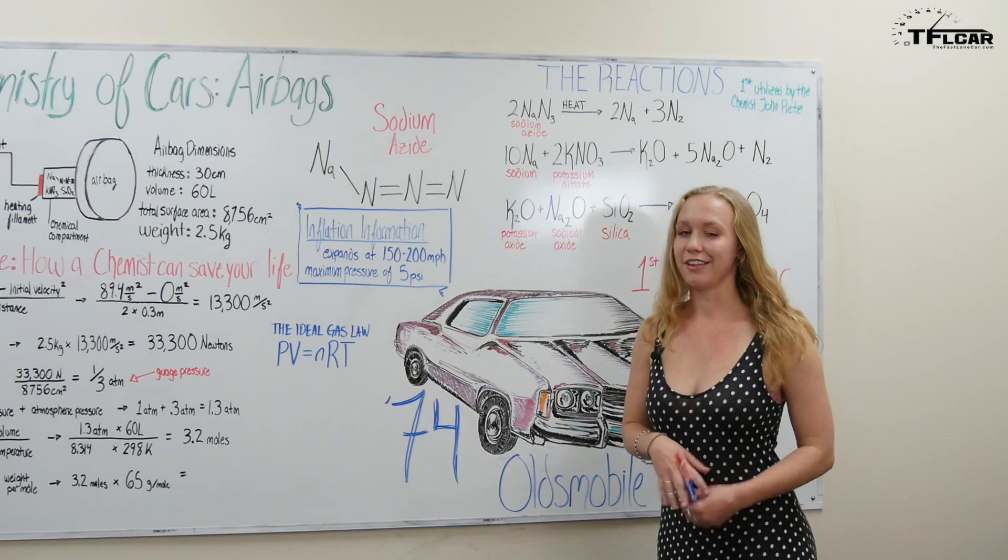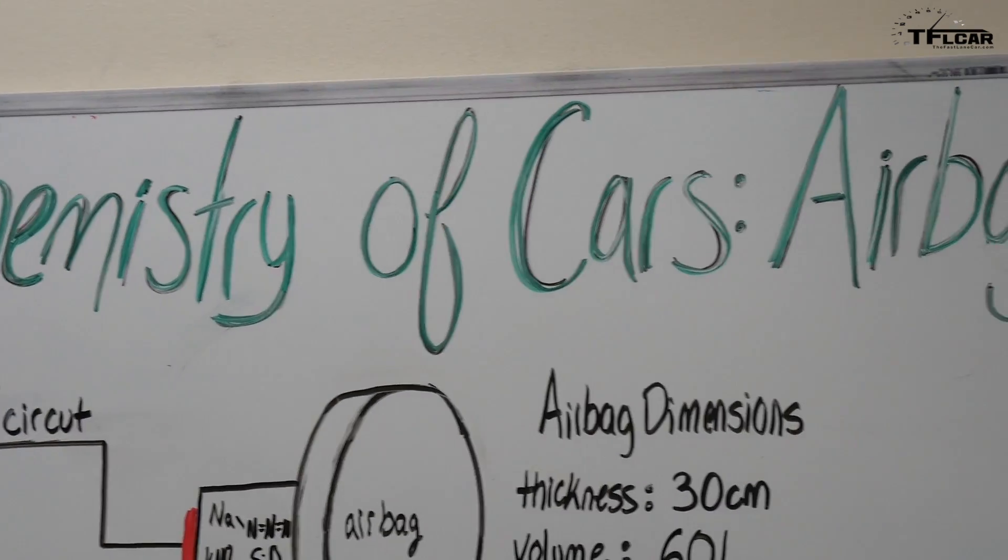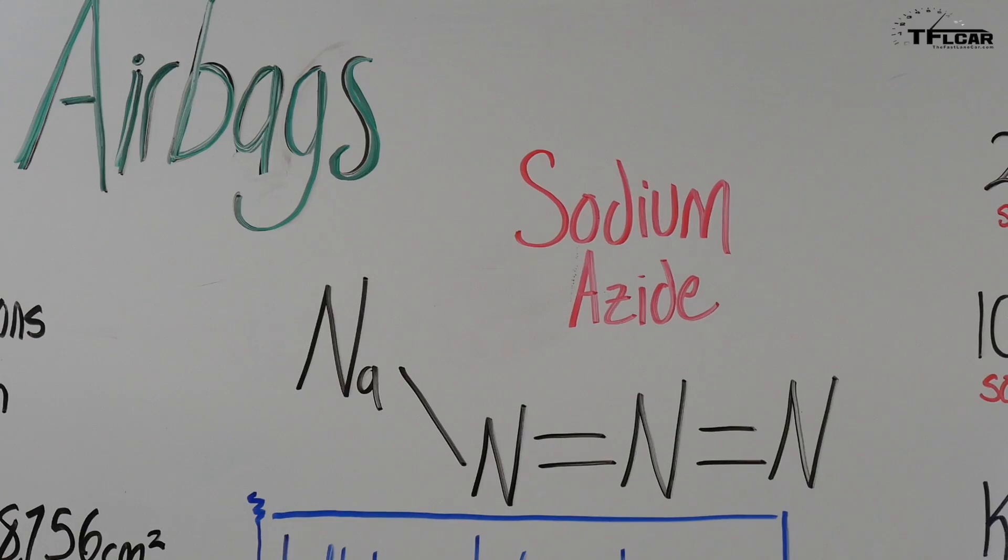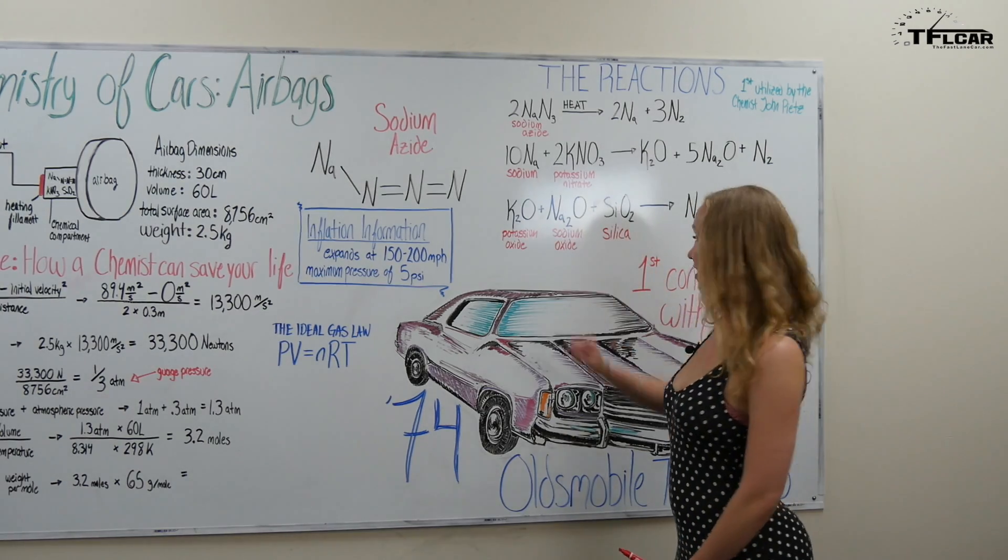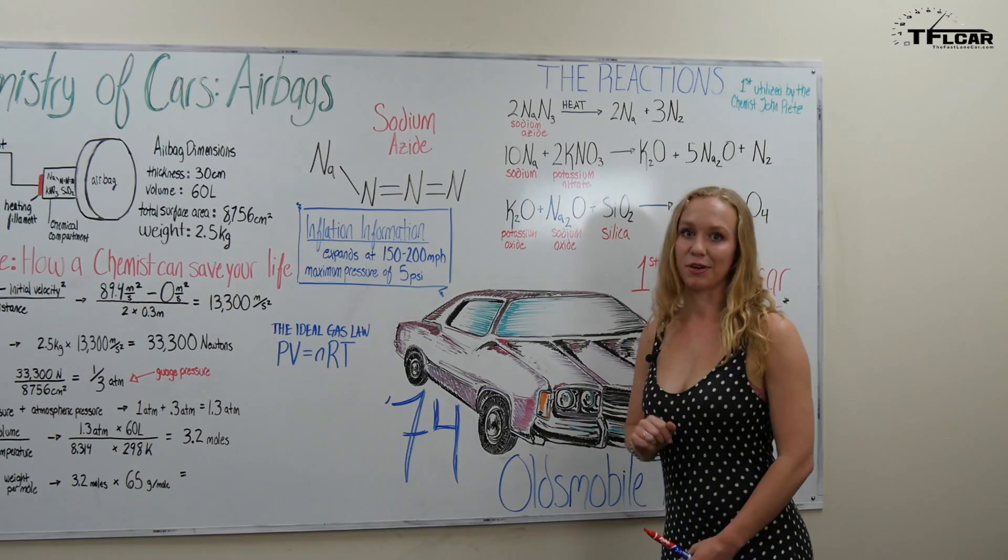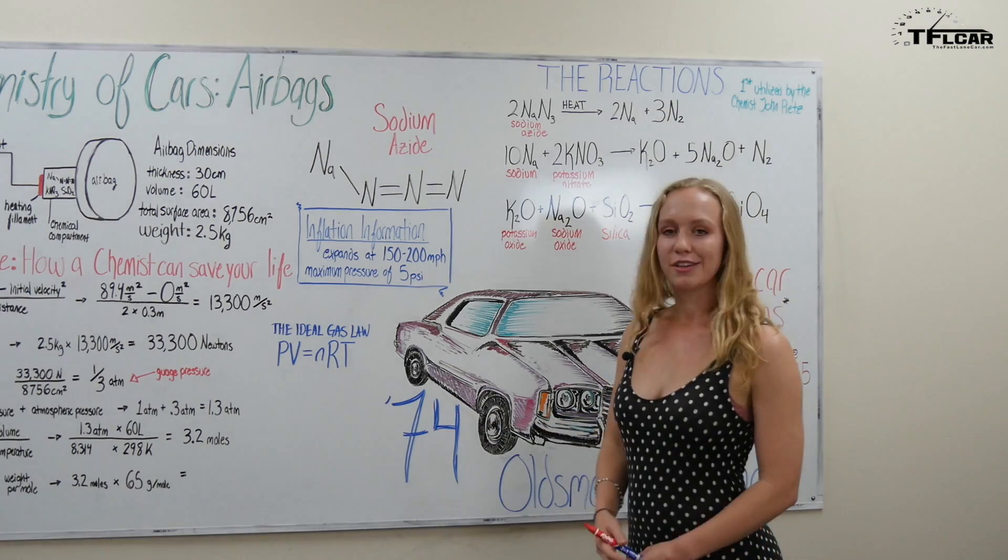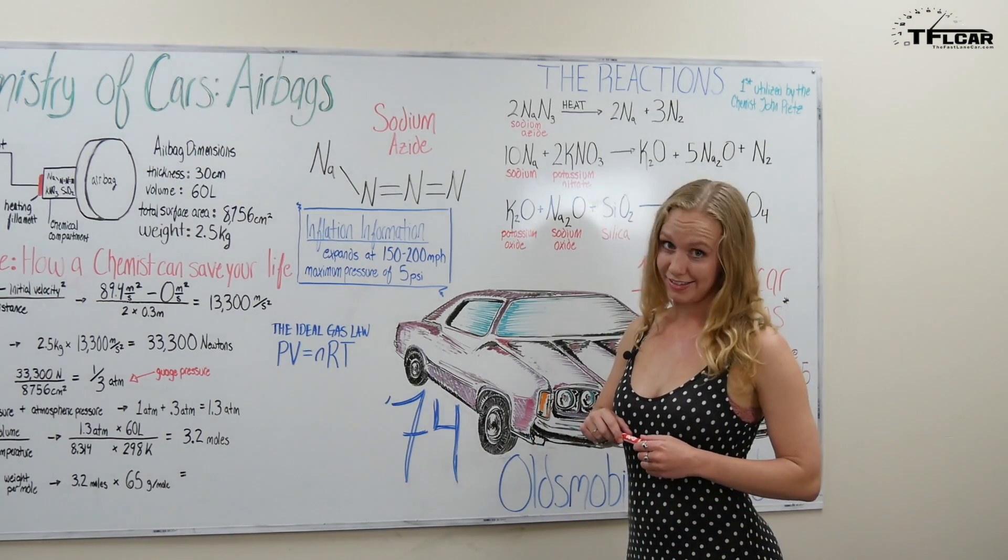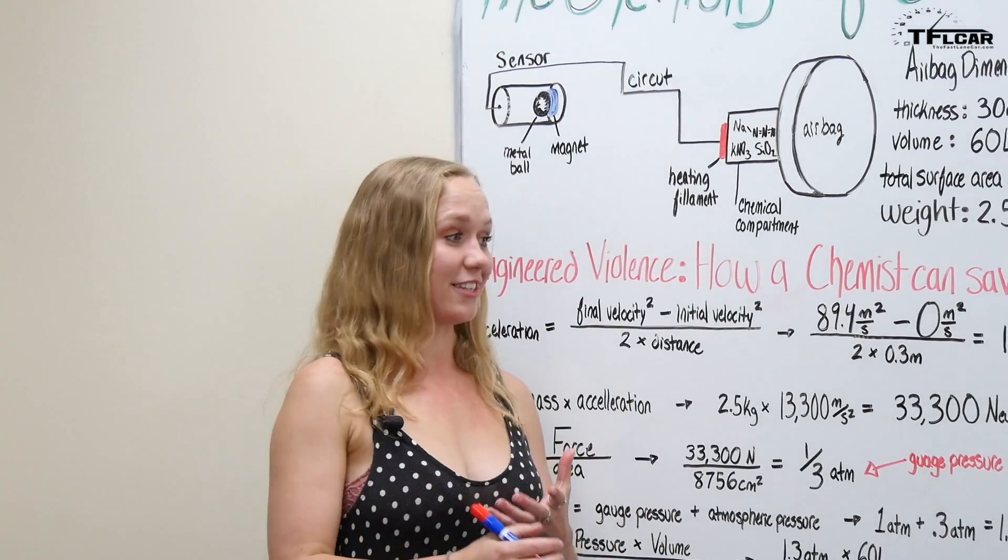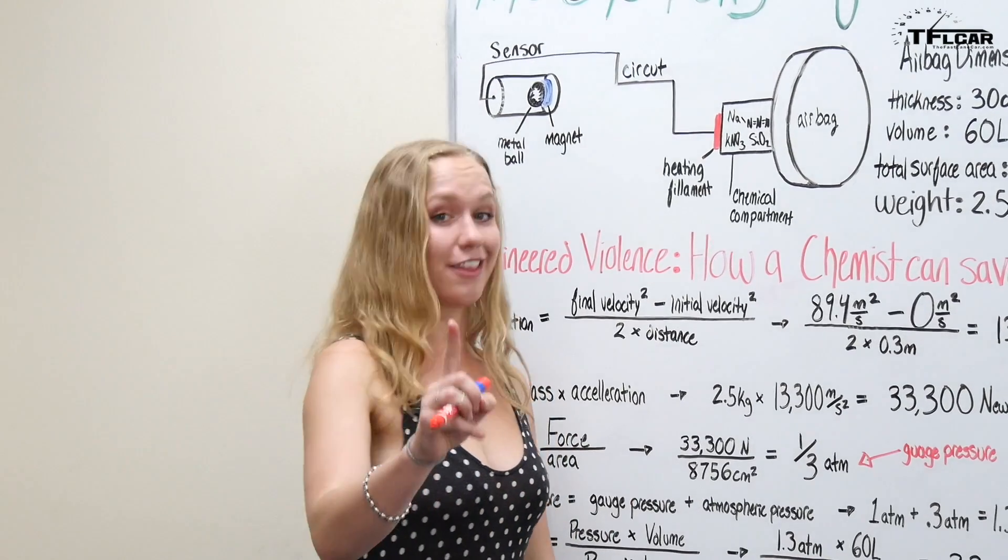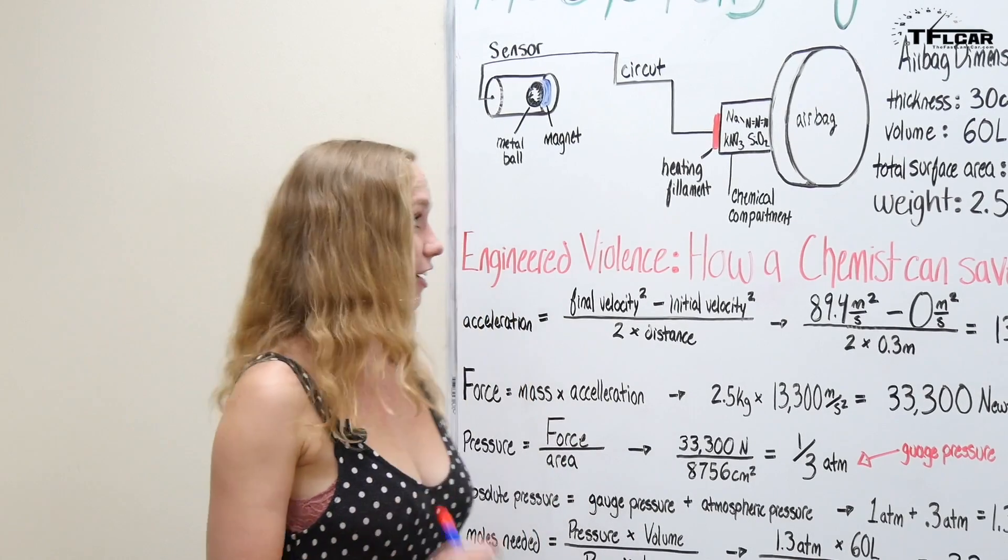Inside your airbag you have three different chemical components. You have sodium azide, you have potassium nitrate, and then you also have silica and we're going to figure out how those come together to produce a whole lot of gas. So here's what happens all within remember 30 milliseconds and it's pretty darn crazy.